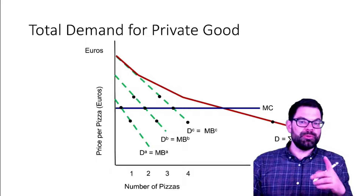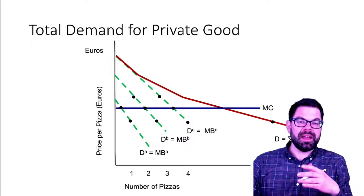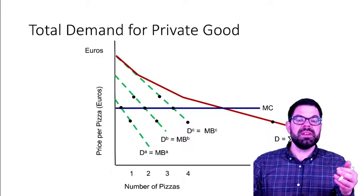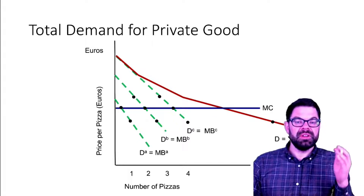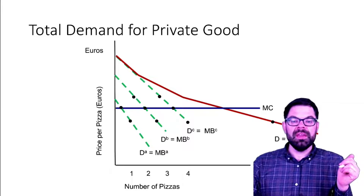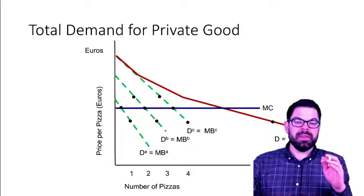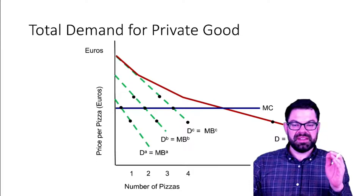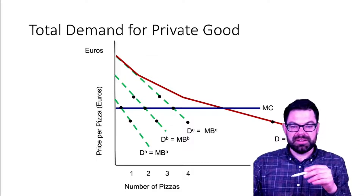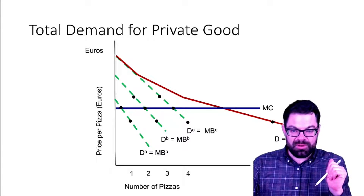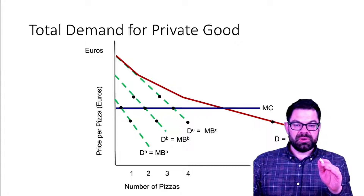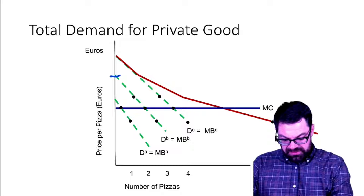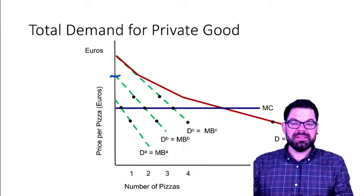Here we have the example of three consumers. Consumer A has a very low willingness to pay for pizzas, consumer B higher, but not as high as consumer C. We assume that pizzas can be supplied in basically an infinite quantity at a constant marginal cost — that makes our life a lot easier rather than dealing with an upward sloping supply curve. If the price is above a certain level, the only person who demands pizza at all is consumer C.